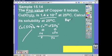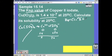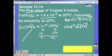Write the Ksp expression. Plug in what you know into the expression. 2x to the squared is 4x squared times x is 4x cubed.